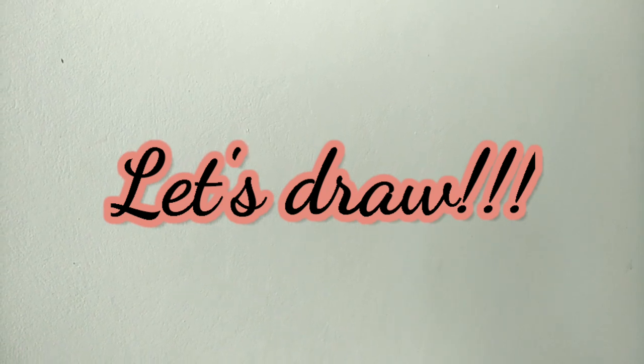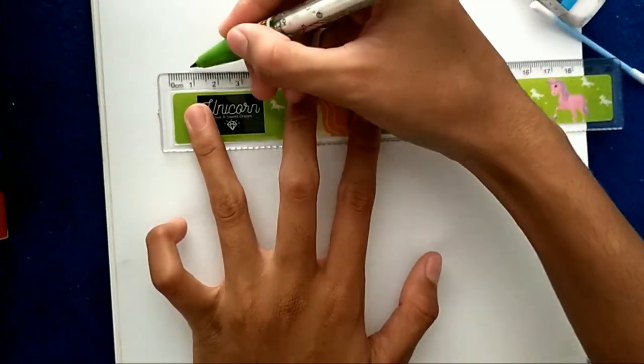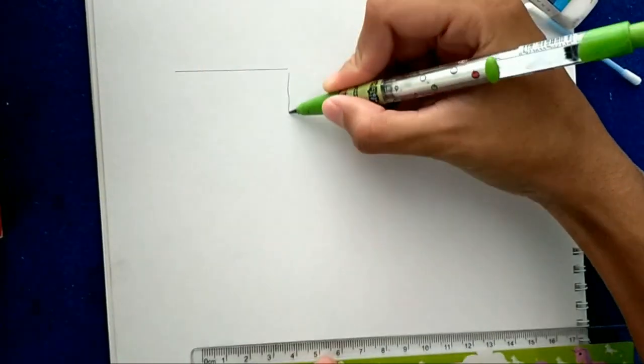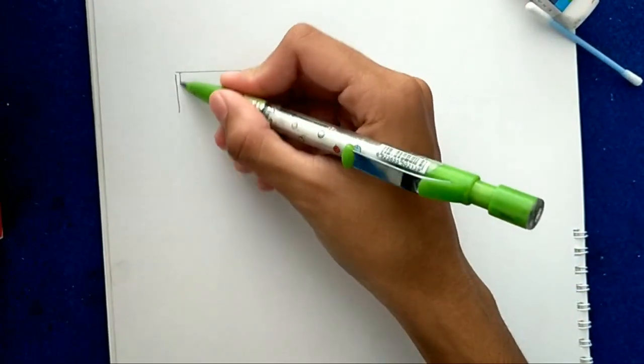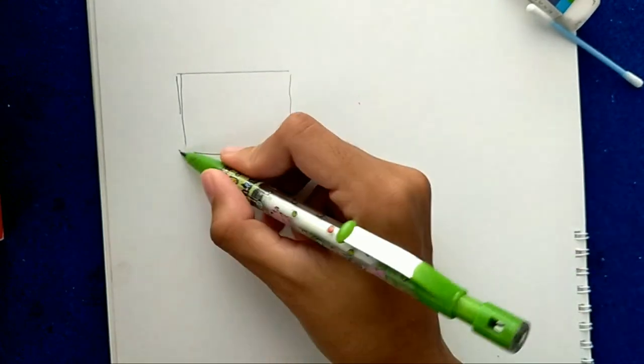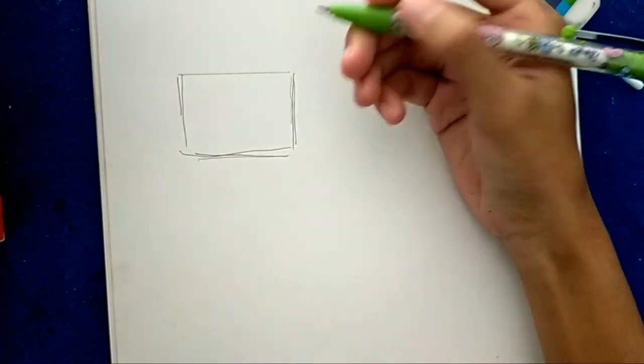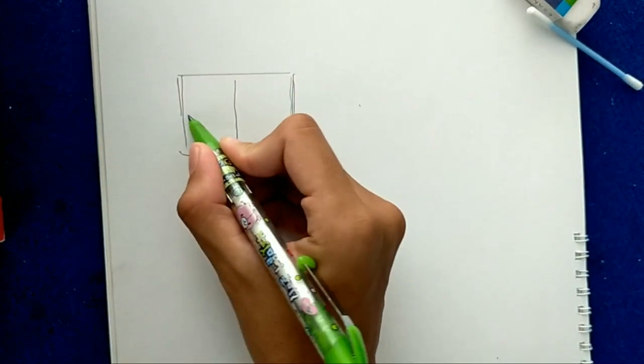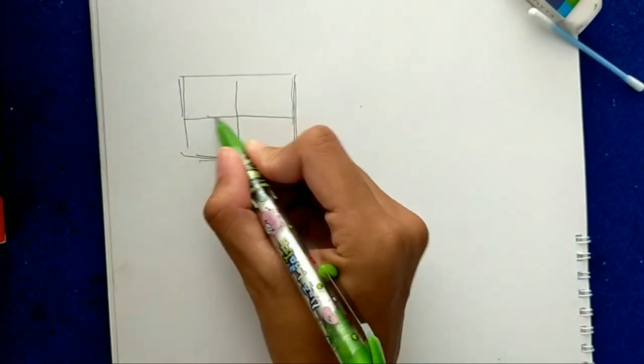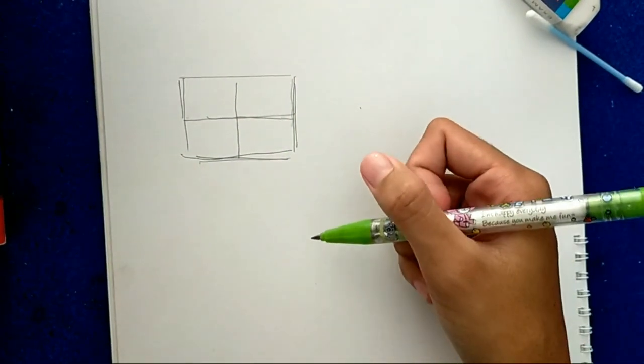Now let's follow the steps. Step 1: You should draw a rectangle. This is to make sure how big is your semi-realistic eye. You can use your ruler or you can just sketch it with your own hand. Now create 2 lines that divide your rectangle into 4 parts.